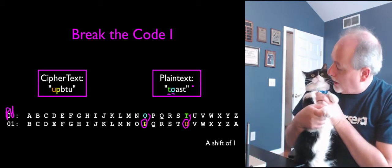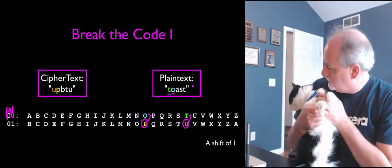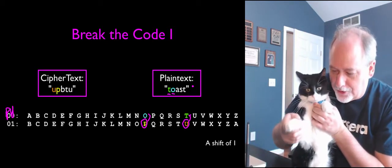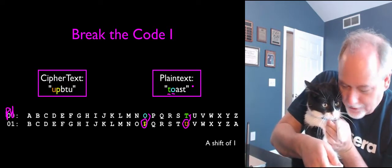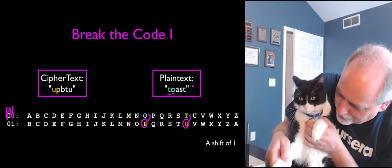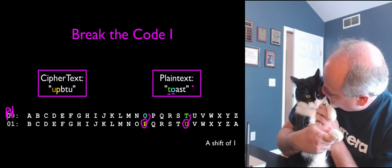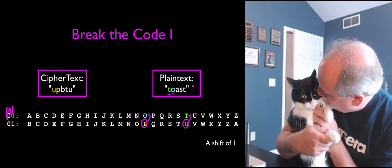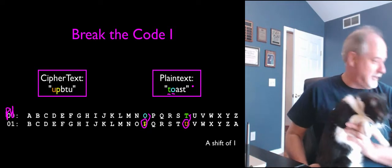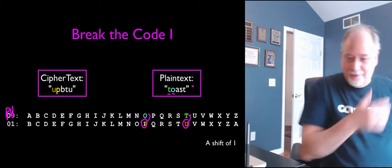So do you know anything about encryption? You use a shift of 1, and then you go from the encryption text up to the plain text. Meow. Okay. You are clearly not interested in my lecture.